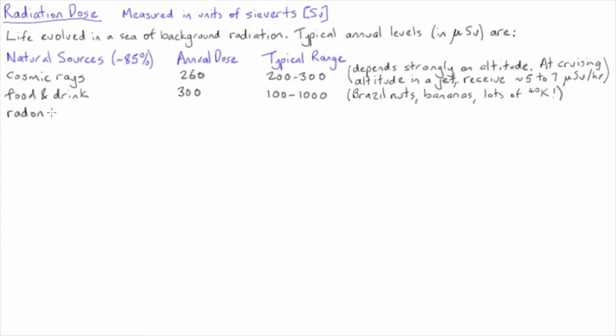The biggest source of natural radiation exposure tends to be due to the radon gas that is produced in the decay of naturally occurring uranium and thorium throughout the Earth. Note that radon gas is an alpha-emitter, and the gas can be breathed directly into your lungs, the worst possible scenario for an alpha-emitting isotope.